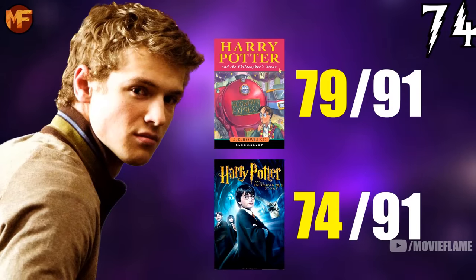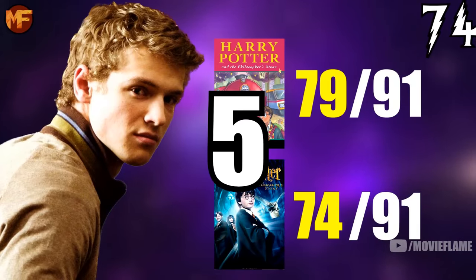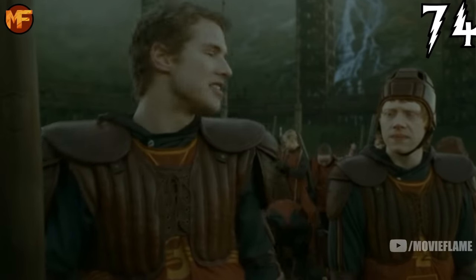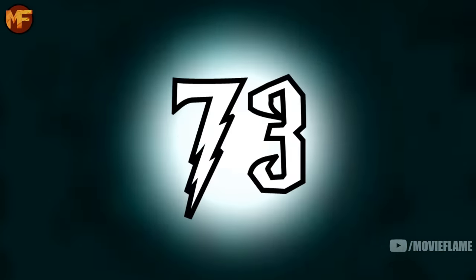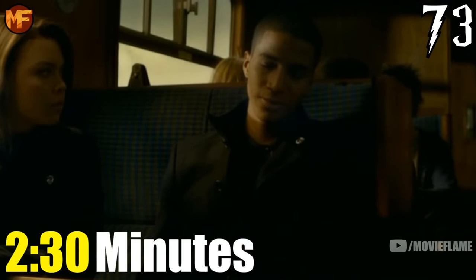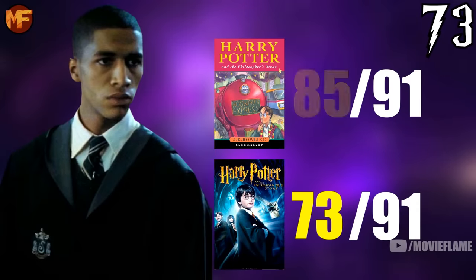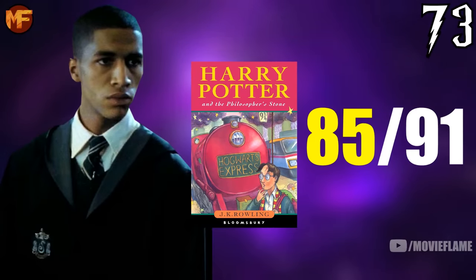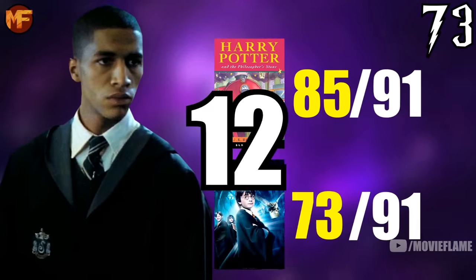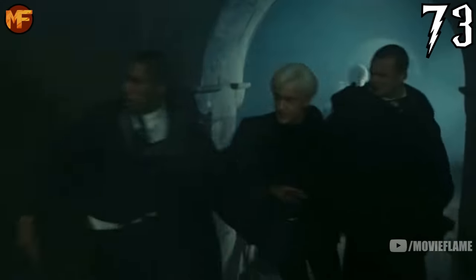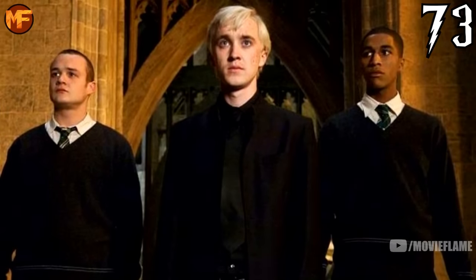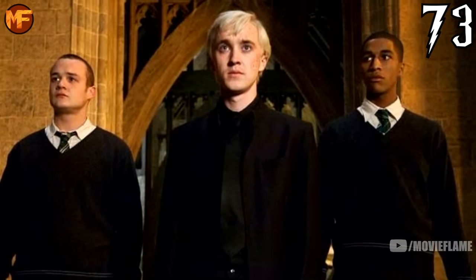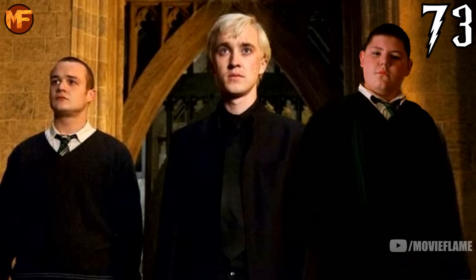Number 74 is Cormac McLaggen with two minutes and 30 seconds of screen time; in the books he ranked at number 79, only five spots back from the films — making him the second character with a higher movie ranking than book ranking. Number 73 is Blaise Zabini with two minutes and 30 seconds, which is jarring compared to his number 85 book ranking — a 12-spot difference in favor of the films — because Blaise took Crabbe's spot in the Room of Requirement scene in the final film, as the actor for Crabbe had legal trouble and couldn't participate in the final two movies.